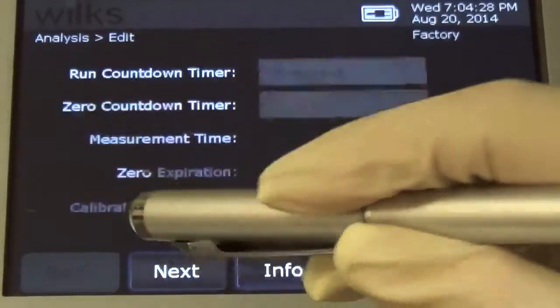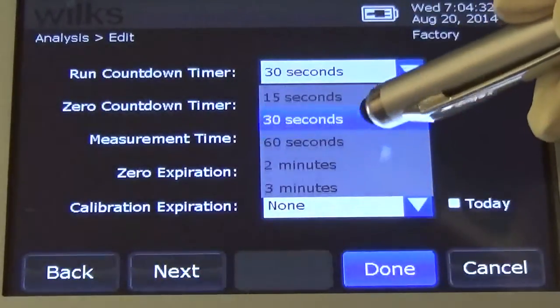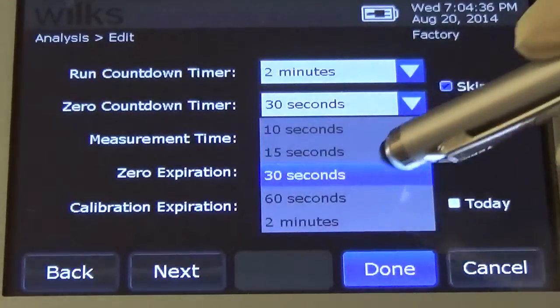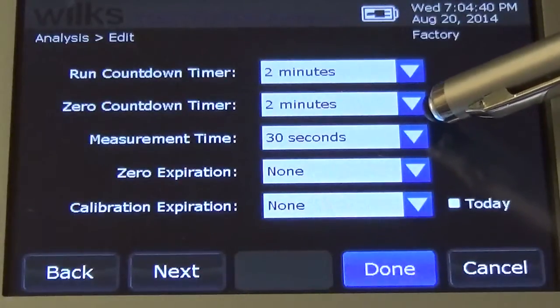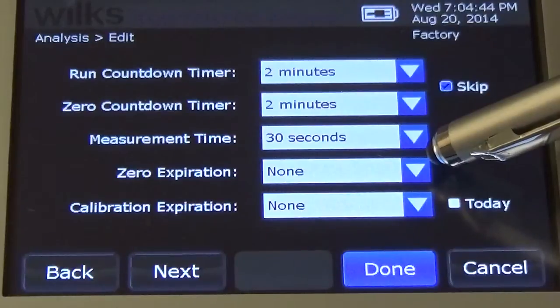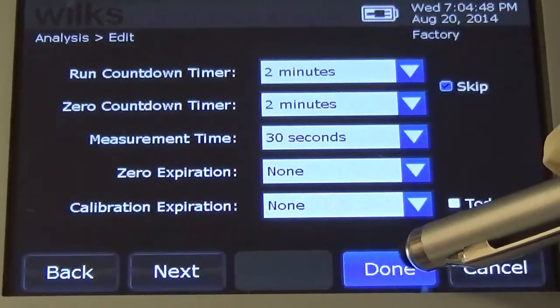Select Next. Set the Run Countdown Timer to 2 minutes. Set the Zero Countdown Timer to 2 minutes. Set the Measurement Time to 30 seconds. The Zero and Calibration Expiration Times are optional. Select Done.